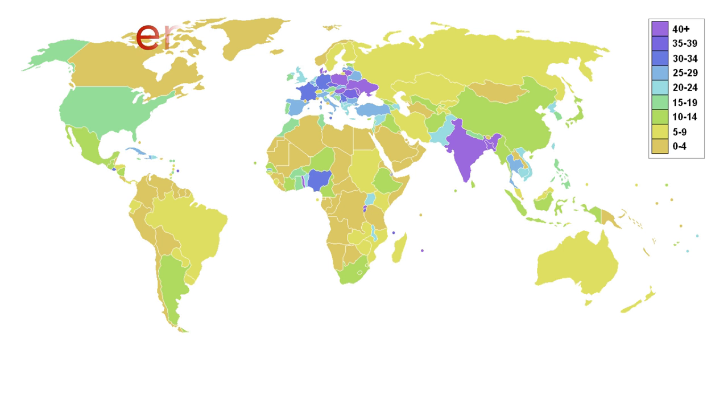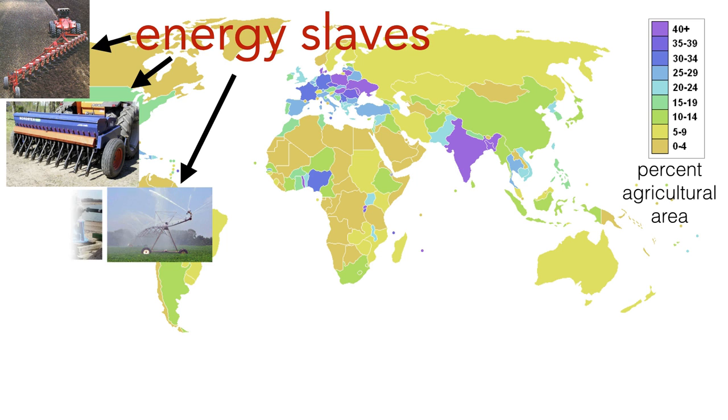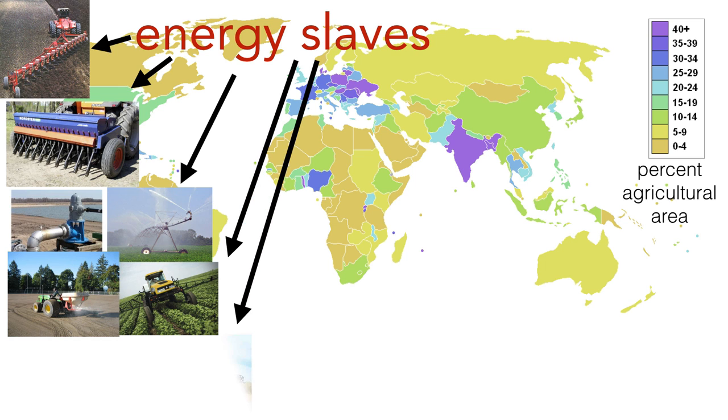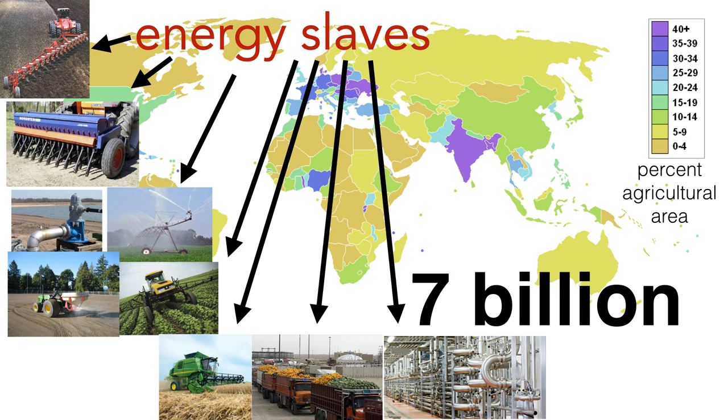Today, with energy slaves using most of the land in each country that can be plowed, planted, irrigated, pest-controlled, harvested, and using roads and trucks to transport and machines to process food, the earth keeps 7 billion from starvation.